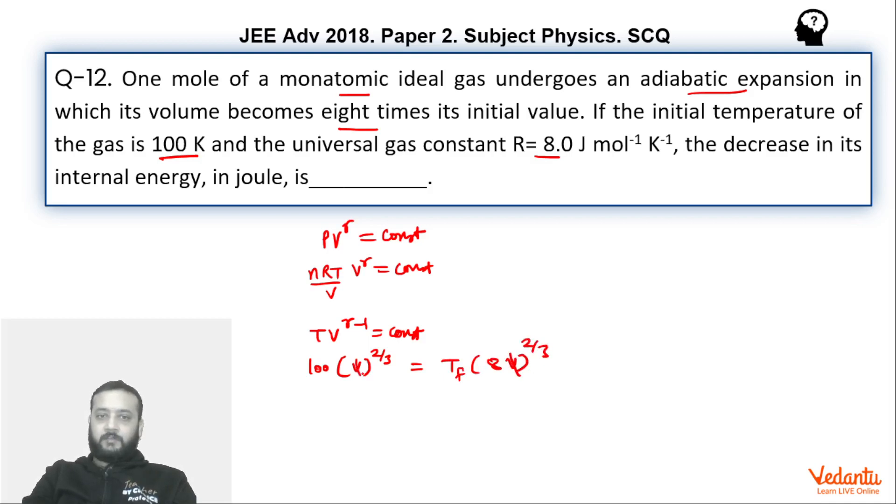So V and V will cancel. We can see that T_f becomes 100 upon 8^(2/3). This becomes 100 divided by – eight to the power 1/3 is two, two squared is four – so this becomes 25 Kelvin.